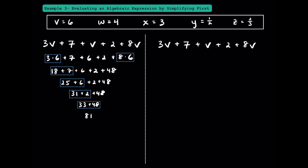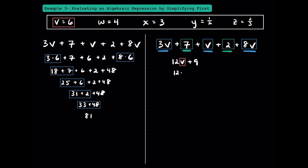So what if we simplified first? Notice that 3v, v, and 8v are like terms. 3v plus 1v is 4v, and 4v plus 8v gets a total of 12v — those three terms can be combined together to make 12v. This 7 and 2 are constant terms, which are also like terms, and can be combined to make 9. Using this simplified expression, let's now plug in 6 for v. Substituting in, we'll have 12 times 6, plus 9. 12 times 6 is 72, so we'll write 72 plus 9, and 72 plus 9 is 81. Technically, you don't have to simplify first to evaluate an algebraic expression. However, it's very common that if you simplify the algebraic expression first by combining like terms, evaluating it will be much easier.